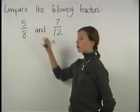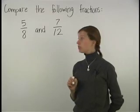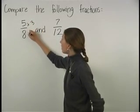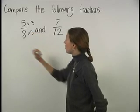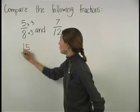To get a 24 in the denominator of 5 eighths, we multiply the numerator and the denominator by 3, which gives us 15 24ths.